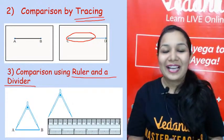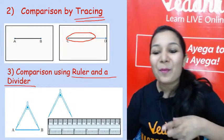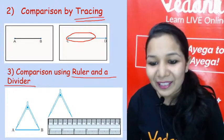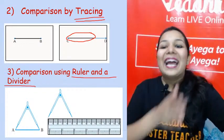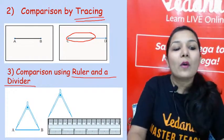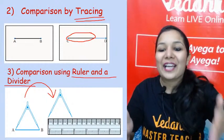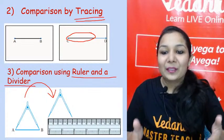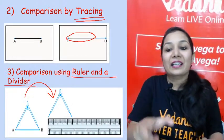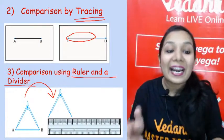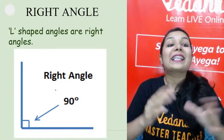Take the divider carefully to the ruler — wherever its end points fall on the ruler, that is the measurement of the line segment. So this was our first topic. Now let's move to the second topic, which is types of angles.